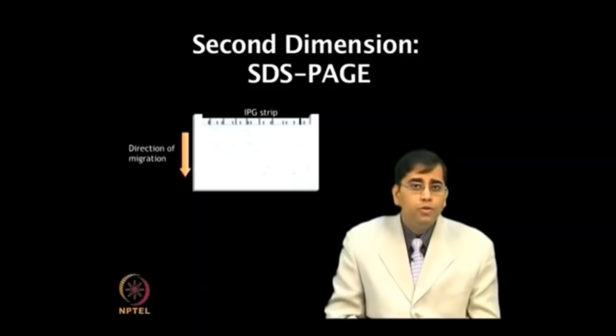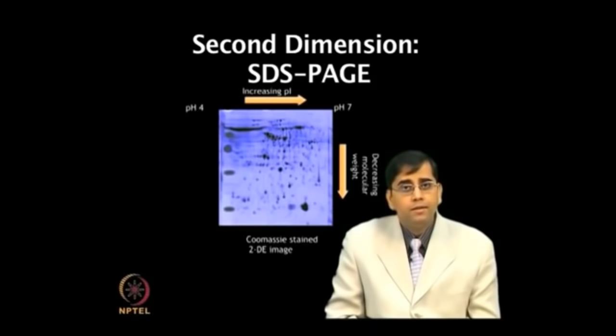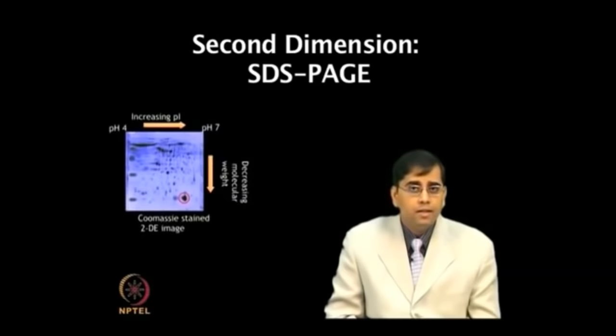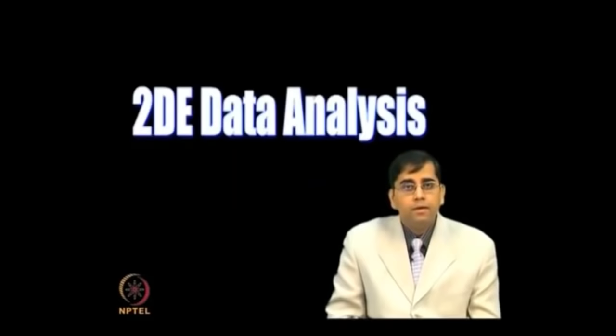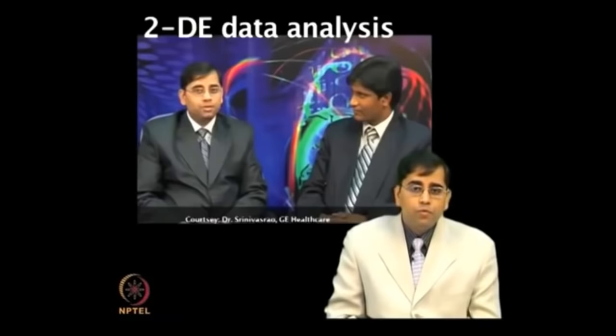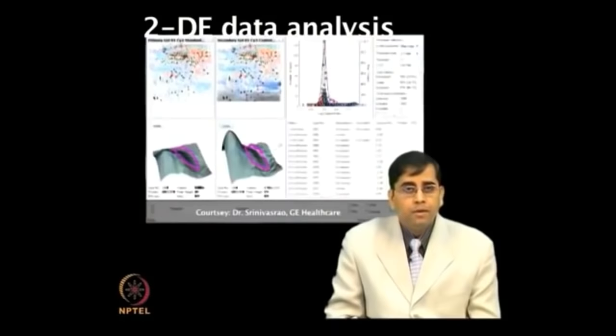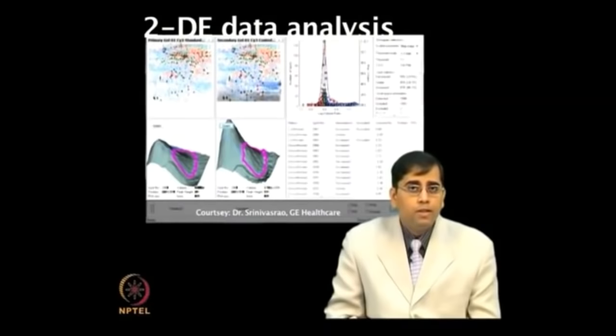Gels can be visualized by different staining methods such as Coomassie staining, silver staining, and cyanine dyes. The gel data analysis will be discussed with an application expert of GE Healthcare. Gel analysis involves image processing, detection of spots, making match sets, landmarking, and viewing histograms.